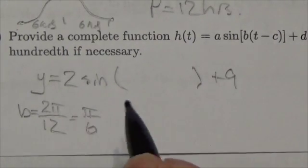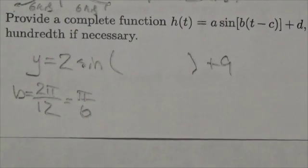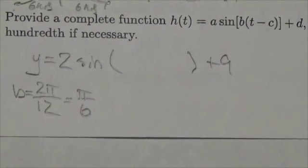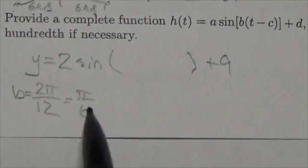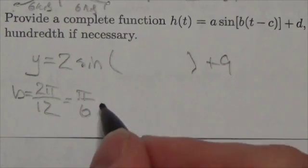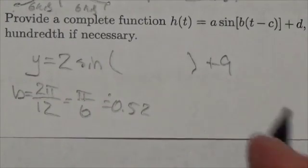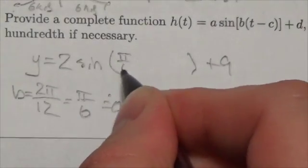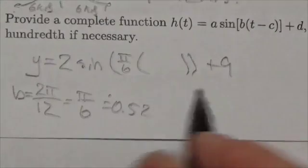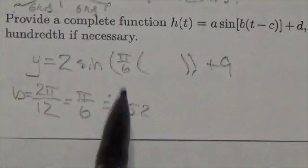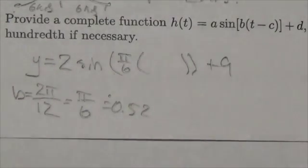Now, this particular question says that they want the answer to the nearest hundredth where, if necessary. Now, I don't know, I would prefer to leave it as π over 6. I suppose we could put this as 0.52, because it's approximately the same thing. But I would be more tempted to believe that as π over 6. Okay, but just so you know, we could put in 0.52 based on the way the question was asked.